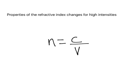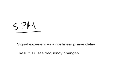One effect of non-linearity in fibre optics is self phase modulation, where the signal experiences a non-linear phase delay, which results in the pulse frequency changes.